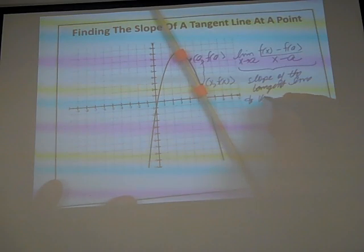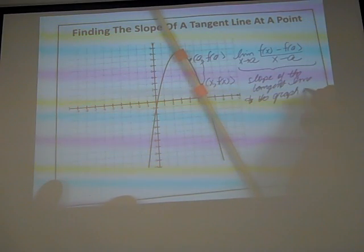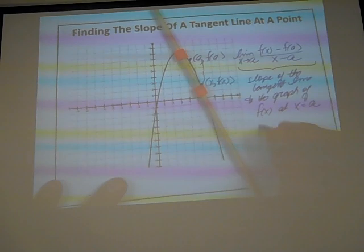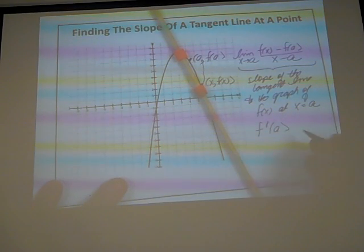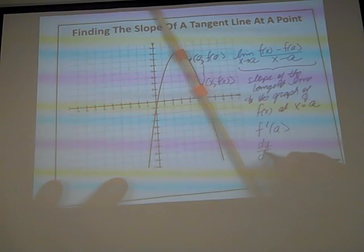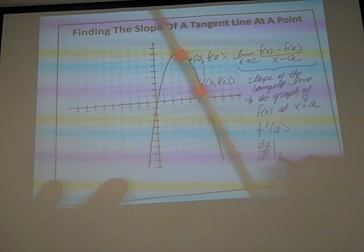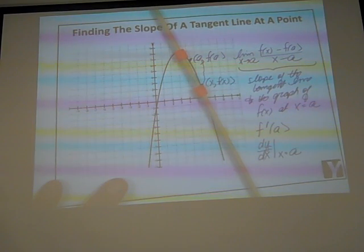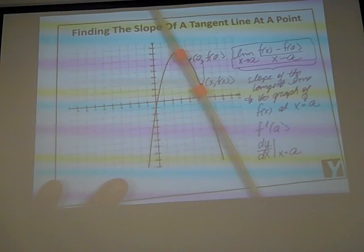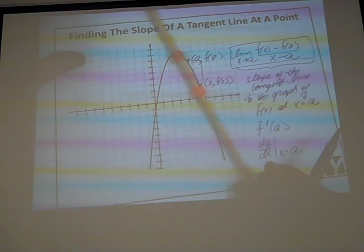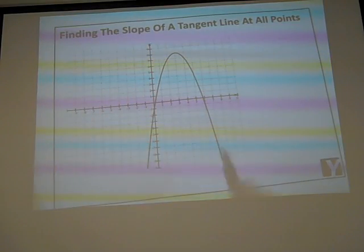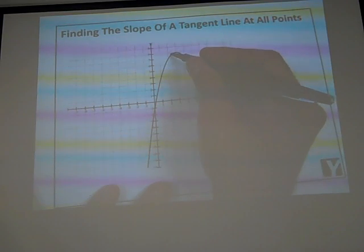Other notations: we say that's f′(a). We might also write dy/dx — the change in y over change in x — evaluated at x = a. This is the formula that must be memorized if you want to find the slope of a tangent line at a particular point.